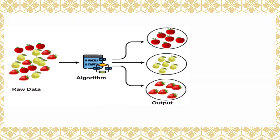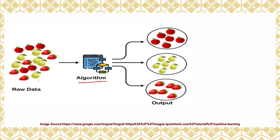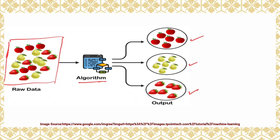See the second example here: the clustering algorithm is making use of unlabeled data that contains a complete mix of fruits. The algorithm will study the patterns and different features of all the data points in this raw data, and it will put them into three different groups. You can check here — this is cluster 1, cluster 2, and cluster 3. The output gives three different clusters, each cluster having objects of the same type.